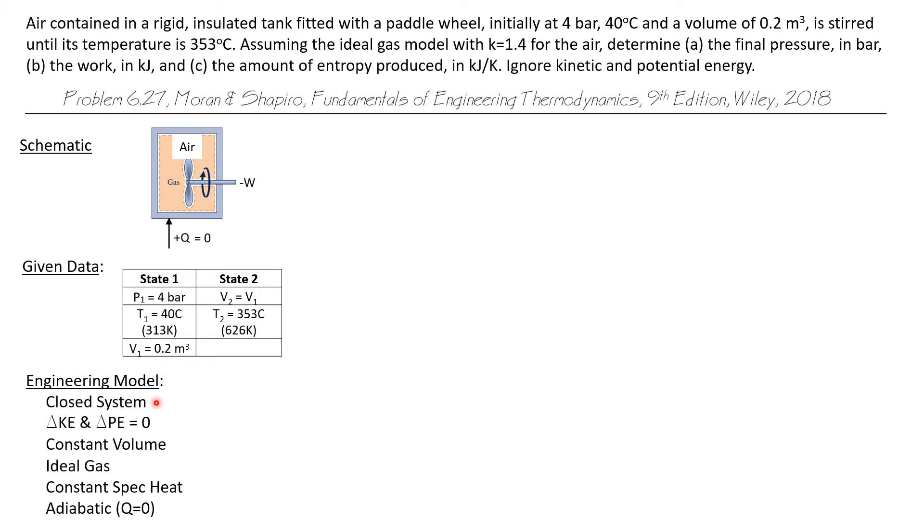We're going to model this as a closed system. We're going to treat kinetic and potential energy changes as being insignificant. It's a constant volume process, also a constant specific volume. We're going to treat the air as an ideal gas. And this is going to affect our problem solution considerably. We're going to assume that constant specific heat applies. And we have license to do this because we were given K equals 1.4.